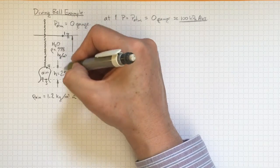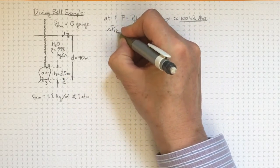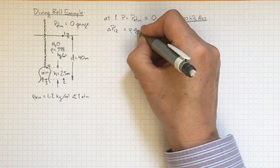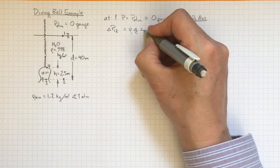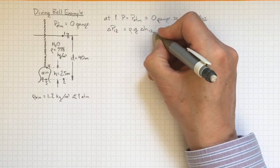There'll be a pressure change from location 1 to 2. Delta p from location 1 to 2 is going to be rho, the density, times g, acceleration due to gravity, times the change in elevation from location 1 to location 2.